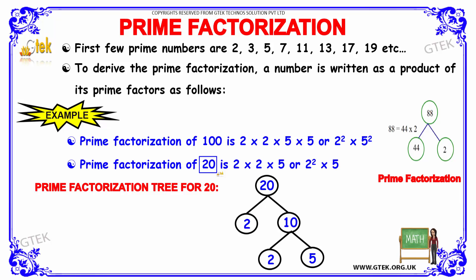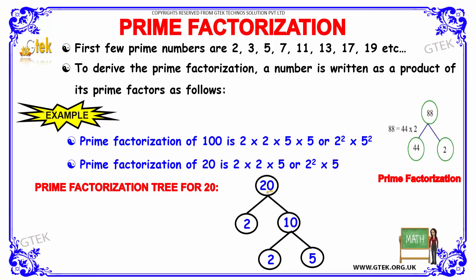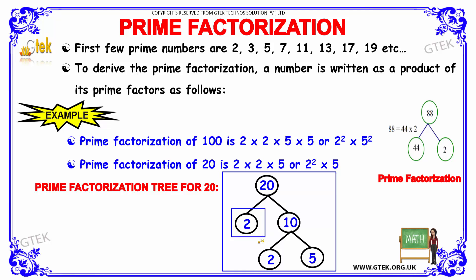Similarly, for the number 20, we can write the prime factors as 2 into 2 into 5, further simplified as 2 squared into 5. You can see how we construct a factorization tree for 20: 20 is written as a multiple of 2 and 10, and 10 is a multiple of 2 and 5, where 2 and 5 are the prime factors.